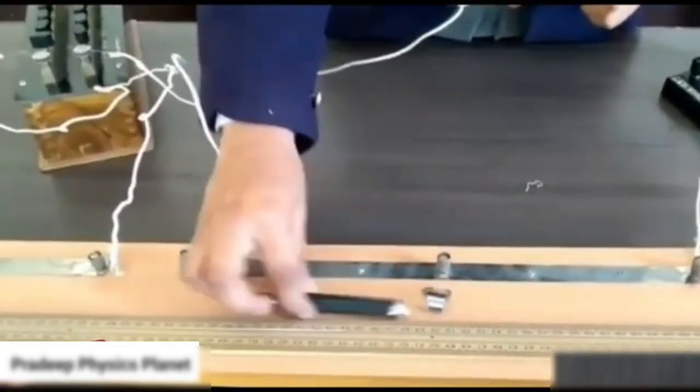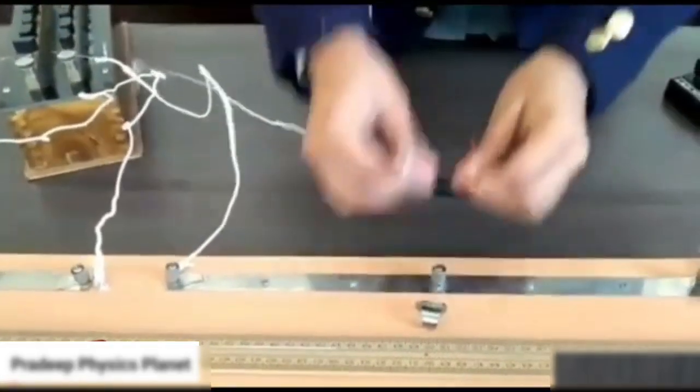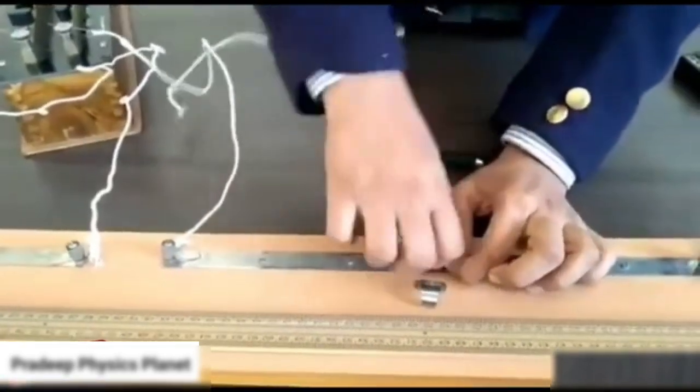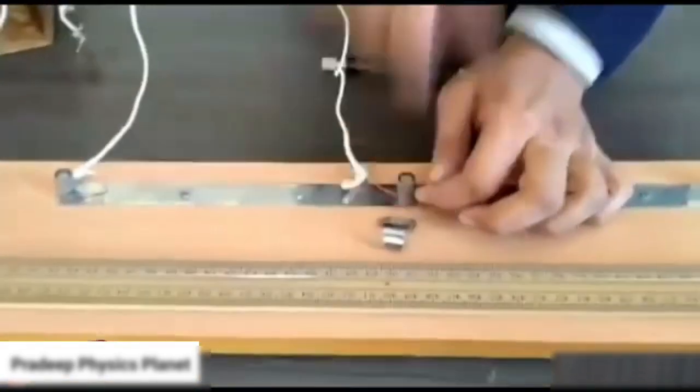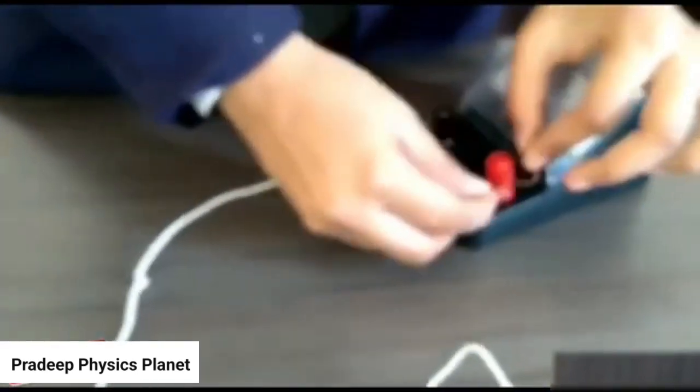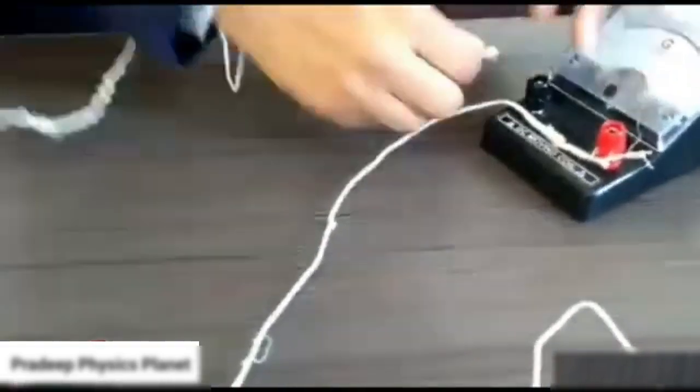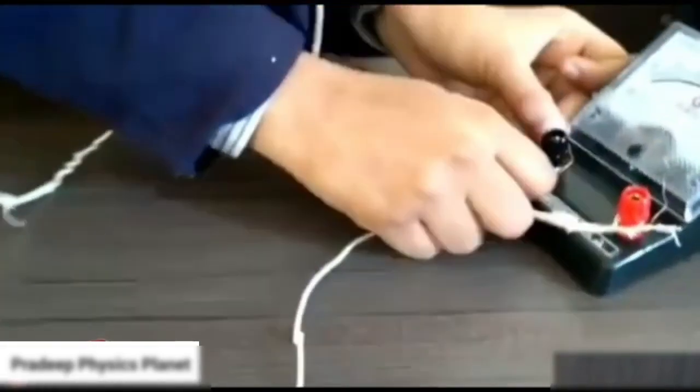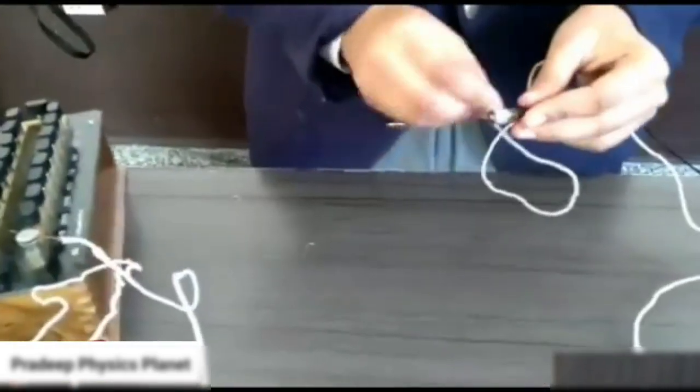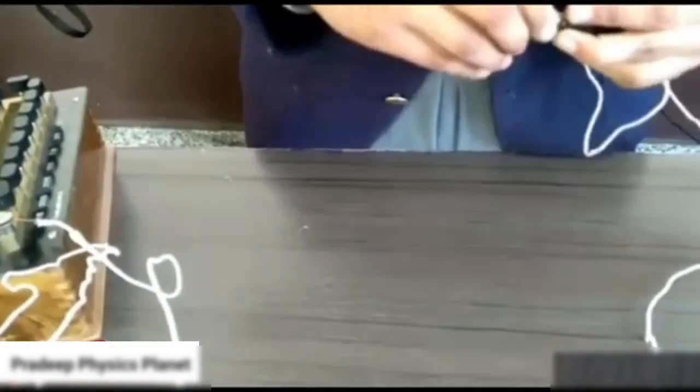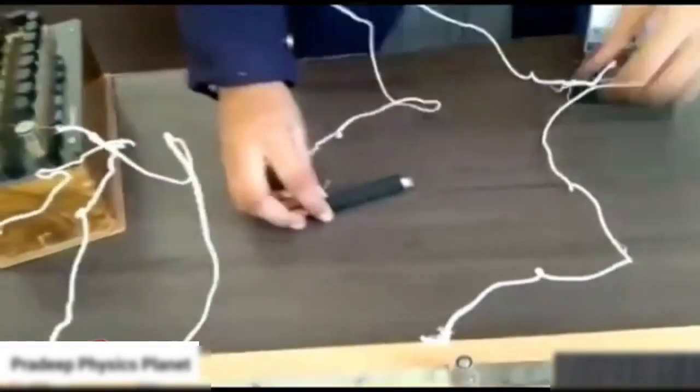Now we connect the wire across this terminal, which is further connected with the positive terminal of the galvanometer. The negative terminal is connected with this jockey. Jockey is just like a pen which is to be slid onto the meter bridge wire so that we can check the null deflection.